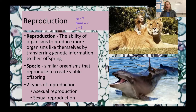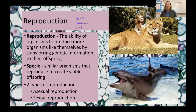A horse and a donkey are not the same species because if you breed a horse and a donkey, you get a mule, and mules are sterile — they can't have more mules. We also have other examples of hybrid organisms: the liger, a mix between a lion and a tiger, and the wholphin, a mix of a whale and a dolphin, and you can see characteristics of both in each.